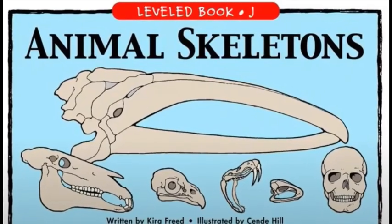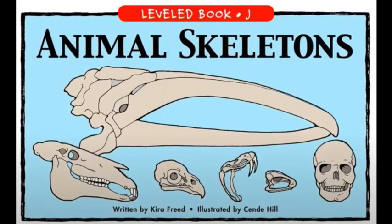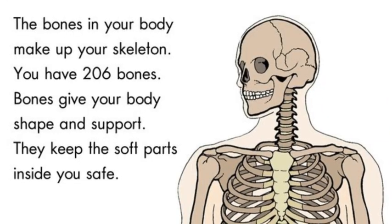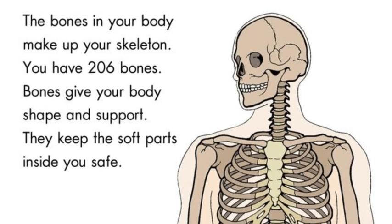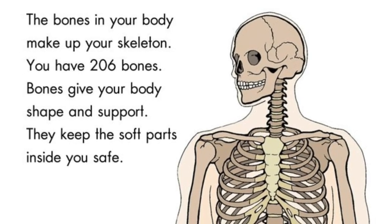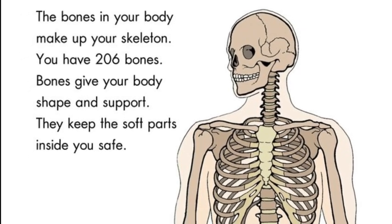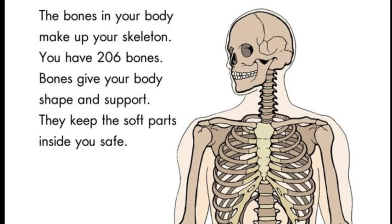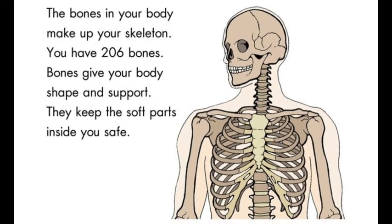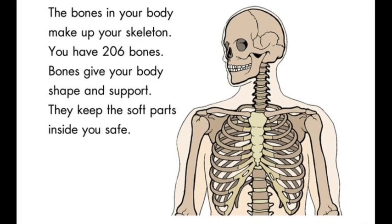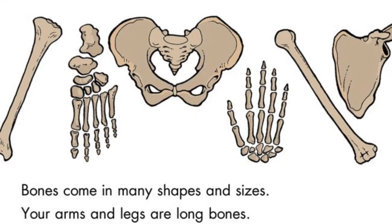Animal Skeleton, written by Kira Freed. The bones in your body make up your skeleton. You have 206 bones. Bones give your body shape and support. They keep the soft parts inside you safe. Bones come in many shapes and sizes.